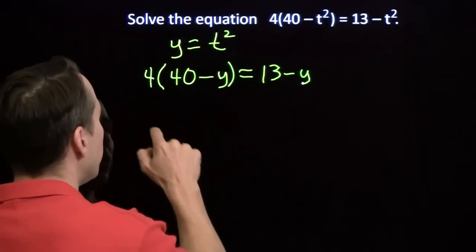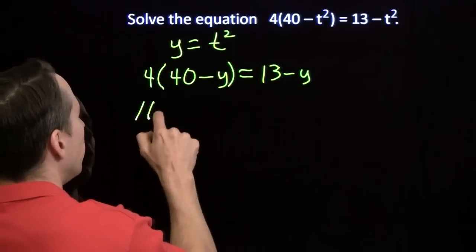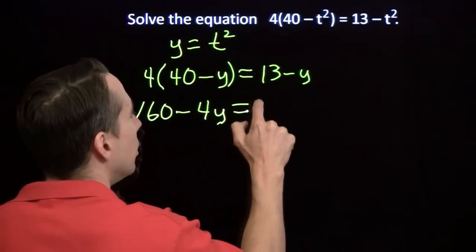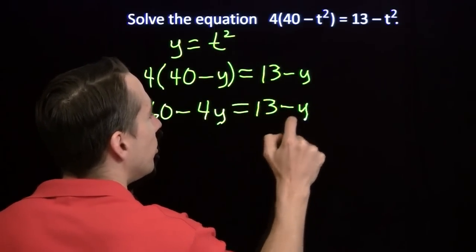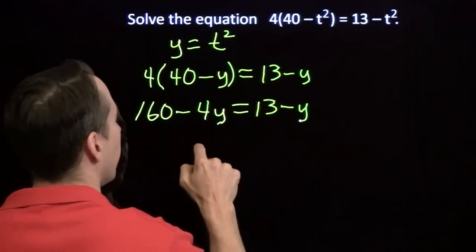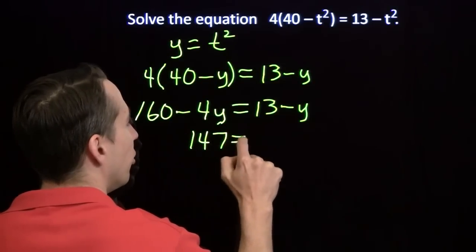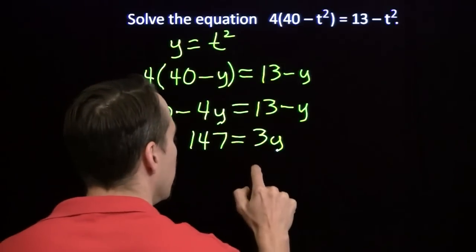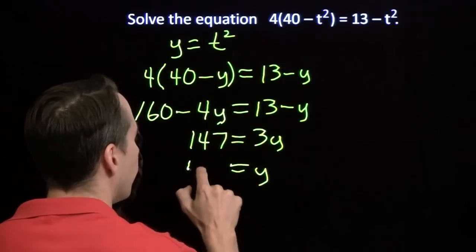Now, I can expand this product on the left. 4 times 40 is 160 minus 4 times y equals 13 minus y. And now we can add 4y to both sides, subtract the 13 from both sides. We get 147 equals 3y. Divide both sides by 3. Y is 49.